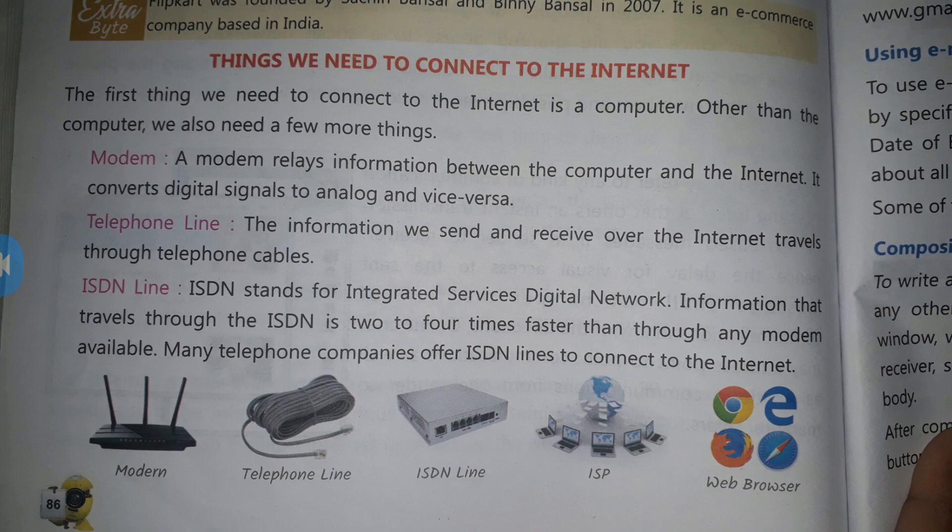We can use the internet through telephone cable. Next is the ISDN line. ISDN stands for Integrated Services Digital Network. It works like a modem but with a telephone line that is 4 times faster. Many telephone companies offer ISDN lines to connect to the internet.